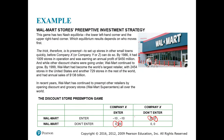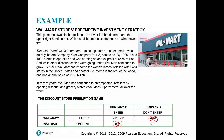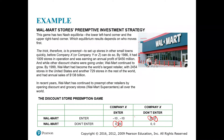This preemption game has two Nash equilibria: the lower left corner and the upper right corner. If Walmart entered, company X would not, and vice versa. The trick, therefore, is to preempt — to set up stores in small towns quickly before company X can do so. By 1986, Walmart had 1,900 stores in operation and was earning an annual profit of 450 million, while other discount chains were going under.